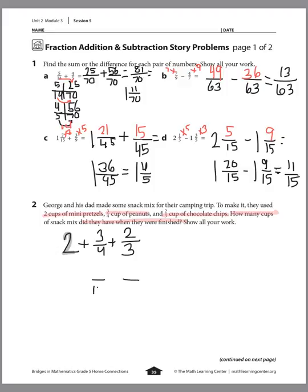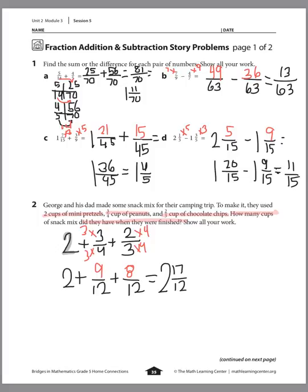We're going to change those denominators to be 12ths. 4 times 3 equals 12, so we multiply the numerator by 3: that gives us 9. Then 3 times 4 equals 12, so we multiply 2 times 4 to get 8. Our new problem is 2 plus 9/12 plus 8/12, which equals 2 and 17/12. That's an improper fraction, so we change it to 3 and 5/12.